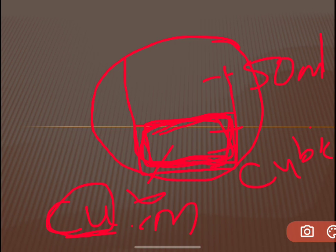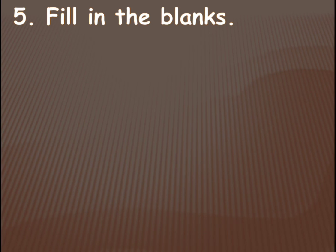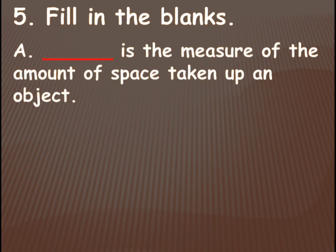The substance can be anything — it might be liquid, solid, or in gaseous form. It is the object which is occupying the space. Now in the second topic they have given fill-in-the-blank questions with the definitions of capacity and volume. The first one: blank is the measure of the amount of space taken up by an object. The answer is volume. Volume is a measure of the amount of space taken up by an object.